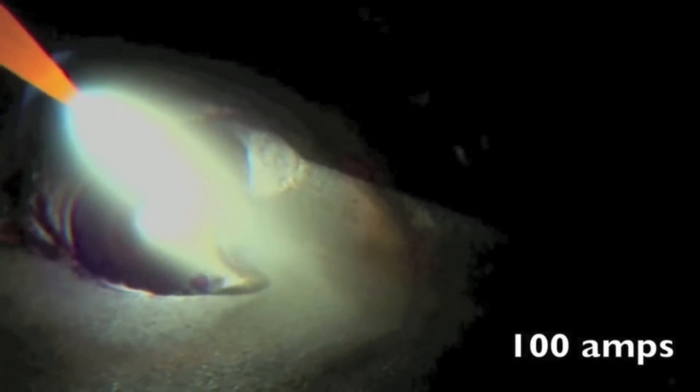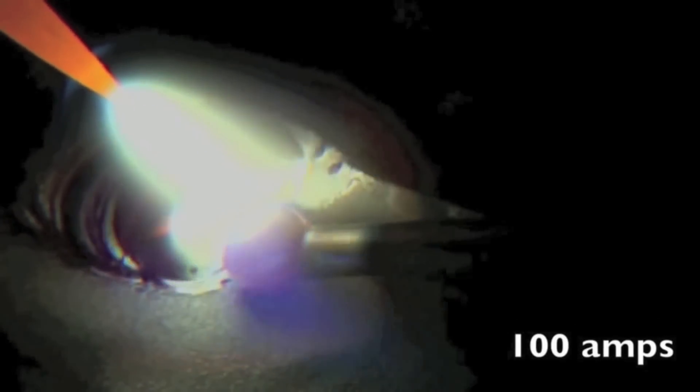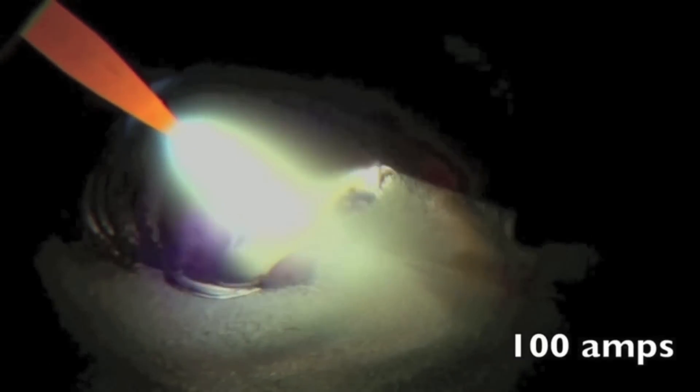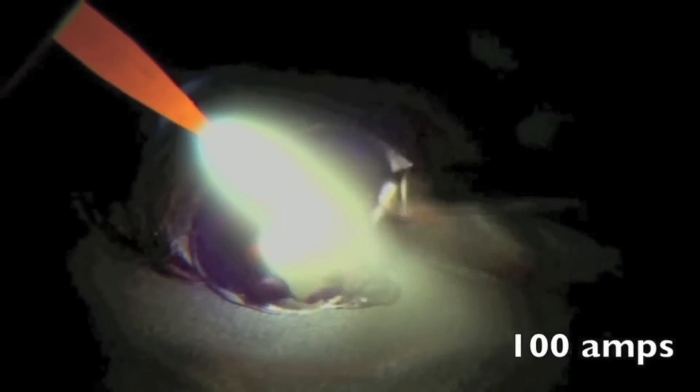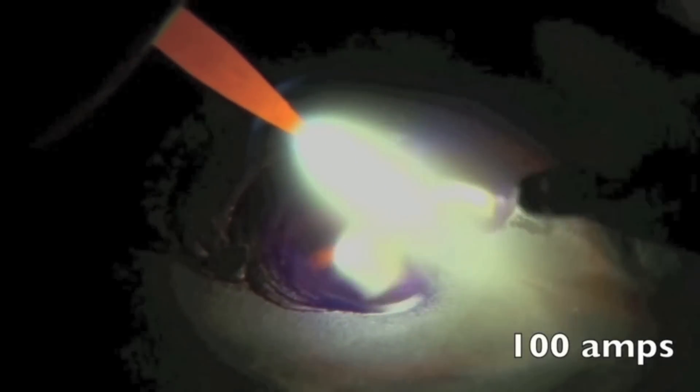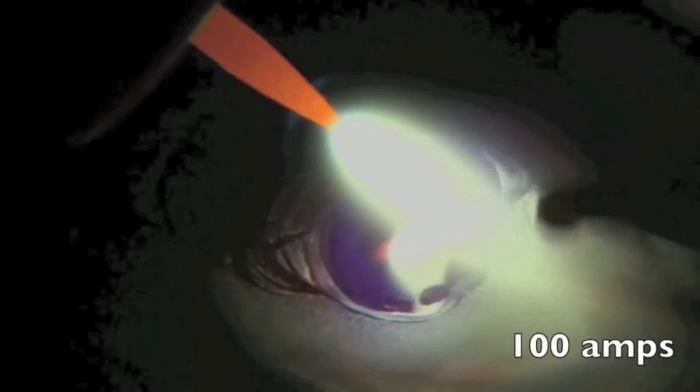There are three things that most people do wrong that prevents them from making a good TIG weld, especially when they're first learning, and that is holding too long an arc, using too much torch angle, and not keeping the hot tip of that rod shielded with argon. This is included in the 2014 DVD as well, but it bears repeating. It's so important that I put it in the 2015 DVD also.